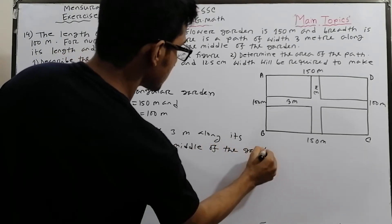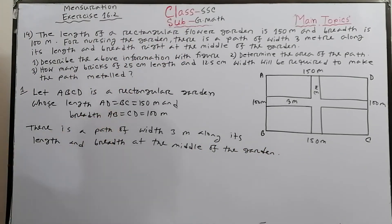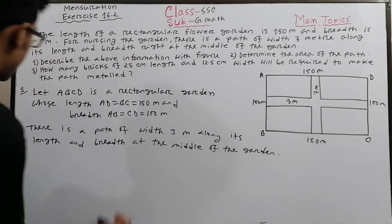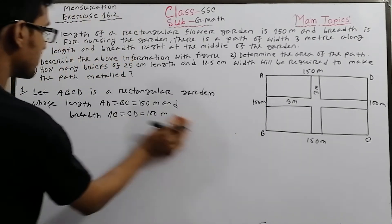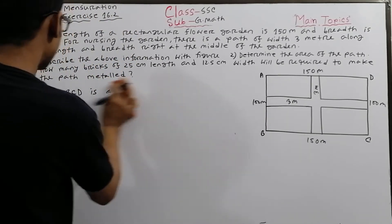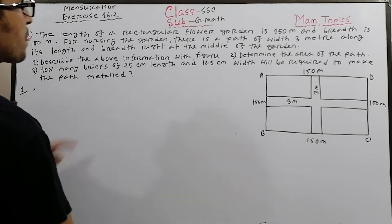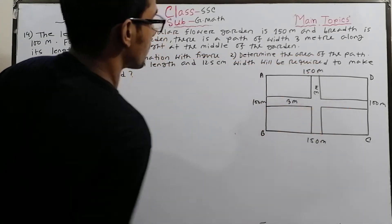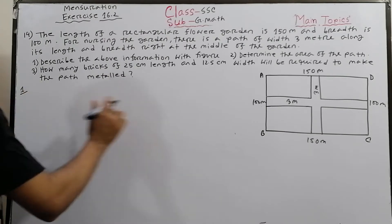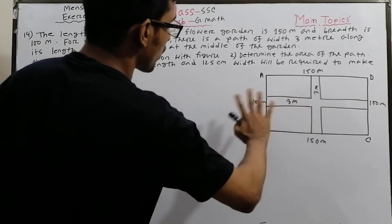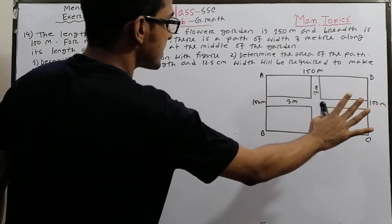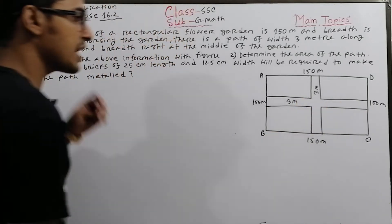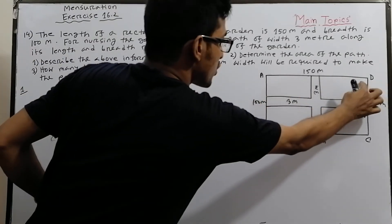With that explanation, the figure is drawn. For part (b), determine the area of the path. To find the area of the path, first we find the area of the garden, then subtract the area without the path.